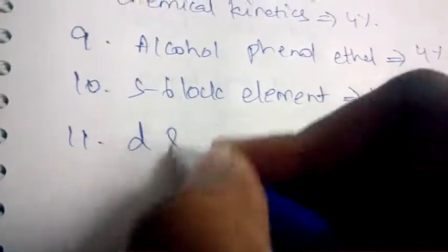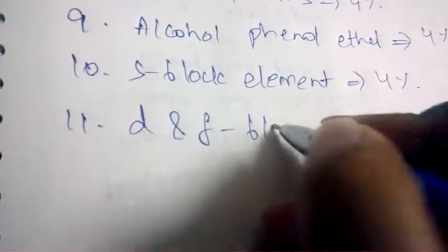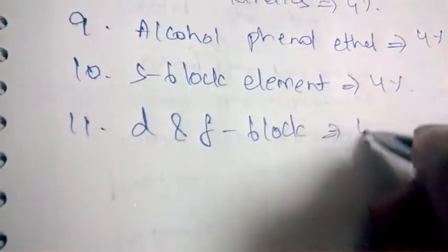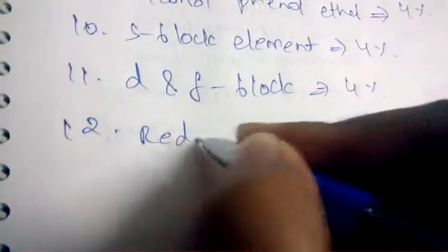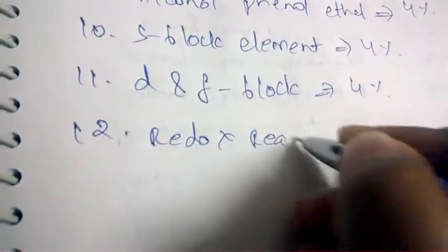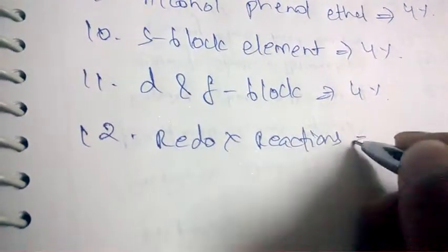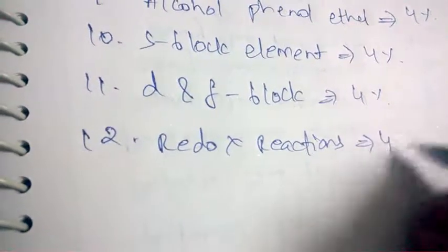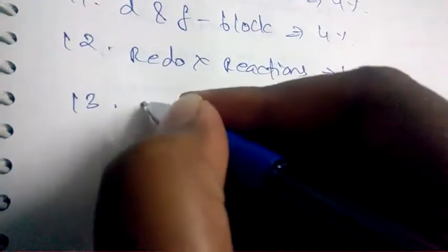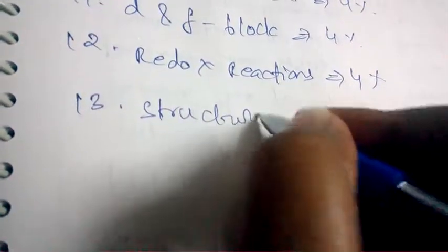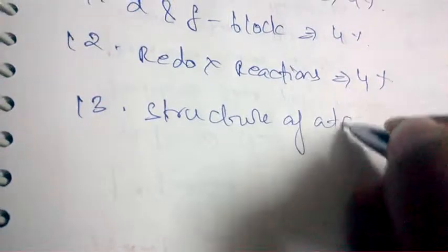Next, D and F block elements — from this particular chapter also 4% of questions will be asked. Next, redox reactions — from the redox reactions chapter also 4% of questions will be asked in the AIIMS chemistry question paper.